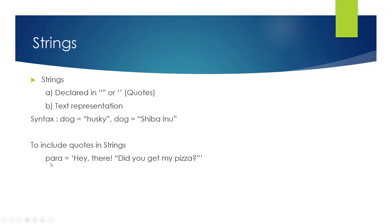Now the question comes: if you want to include quotes in your strings, how do you do it? We have four examples. The first one starts with a single quote and ends with a single quote, but you can include double inverted commas inside. It will only match the first quote type it starts with. The vice versa also works: if it starts with double inverted commas, it should end with double inverted commas, but inside you can use a single inverted comma.